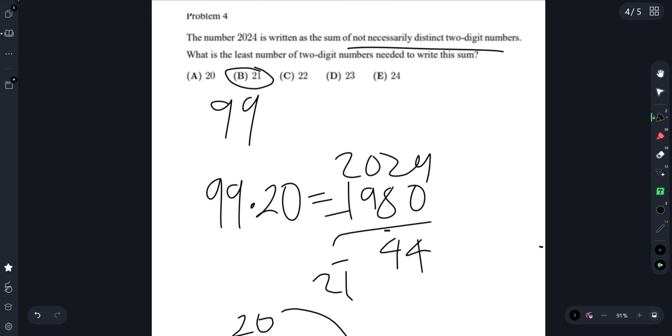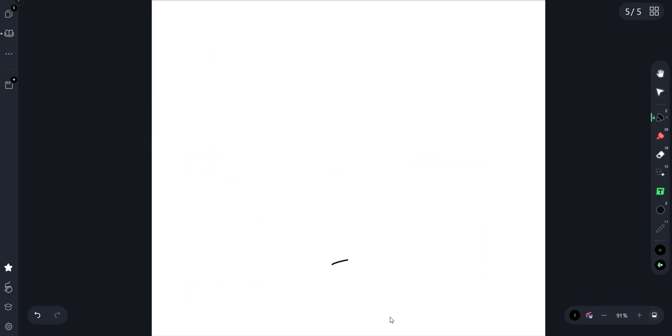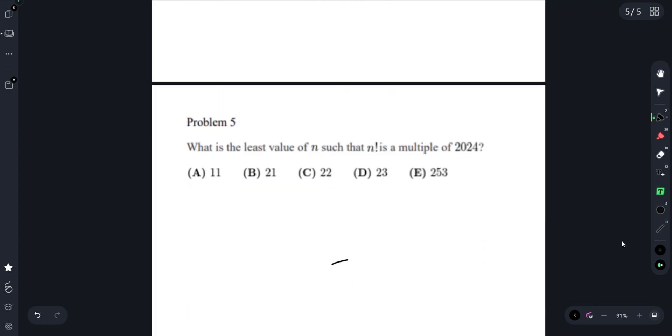And finally, Problem 5: what is the least value of n such that n factorial is a multiple of 2024? The prime factorization of 2024 is 8 times 11 times 23. Since 23 is prime, the smallest factorial that will have 23 as a factor is 23 factorial.